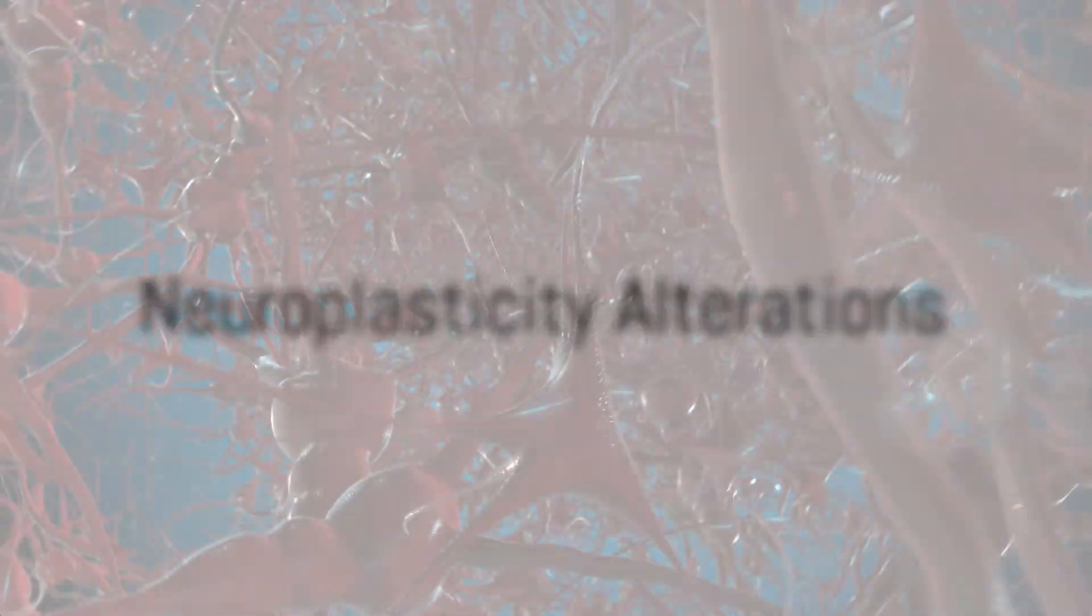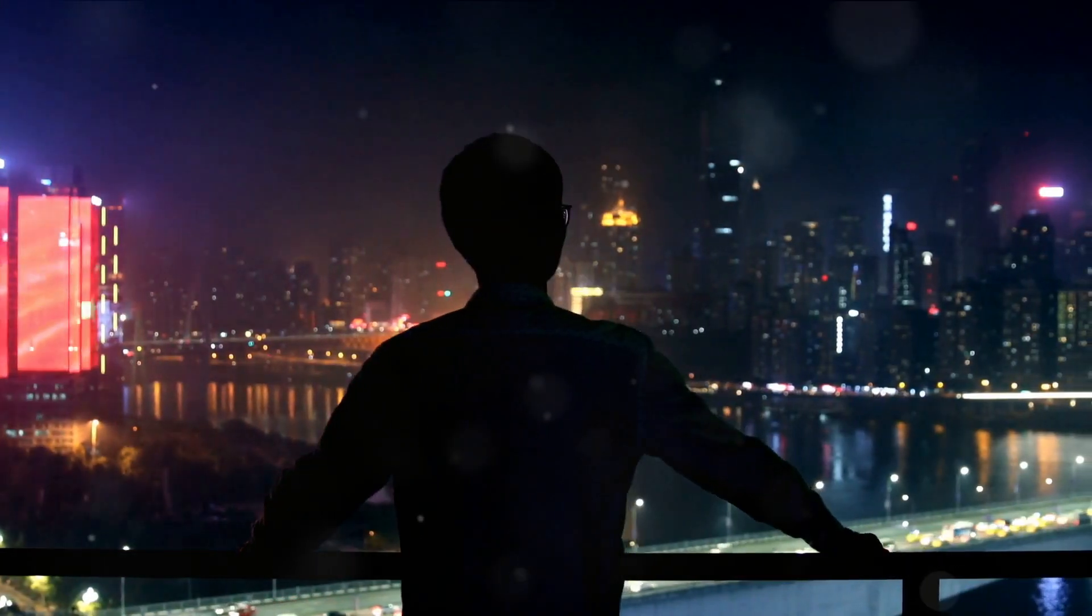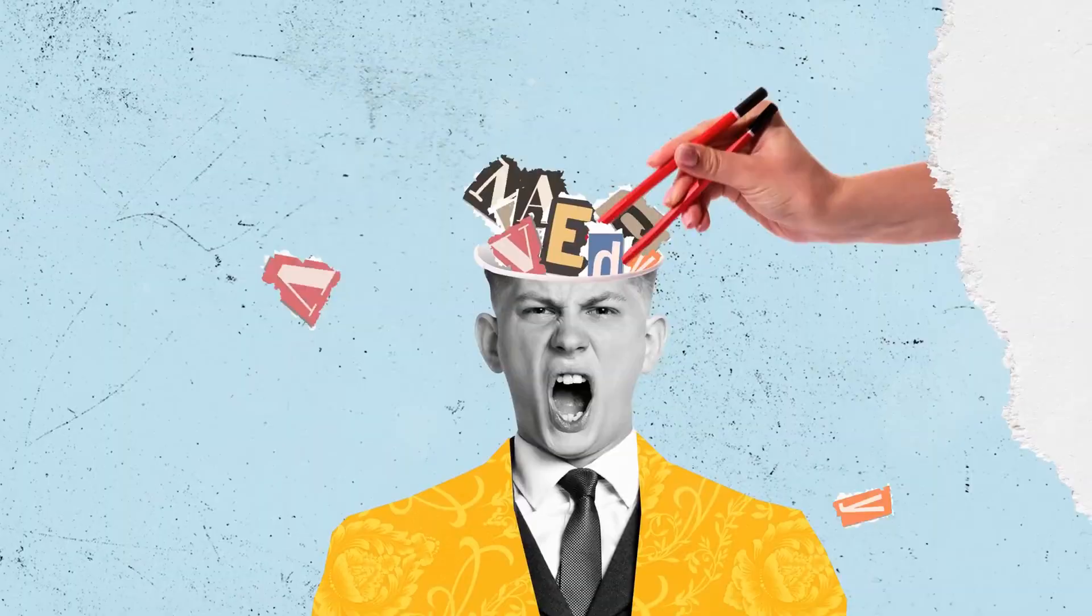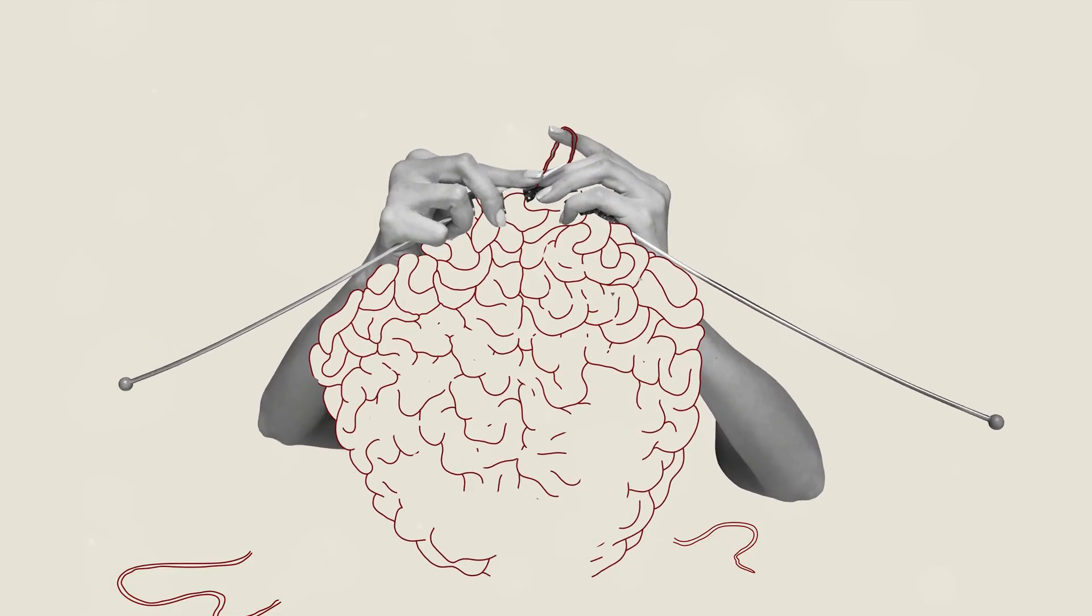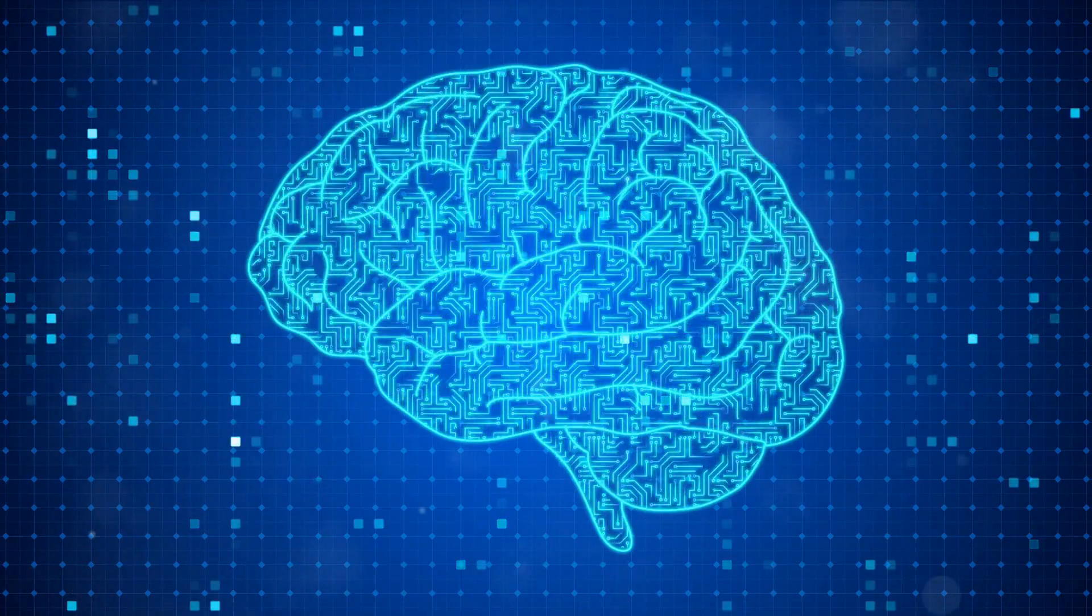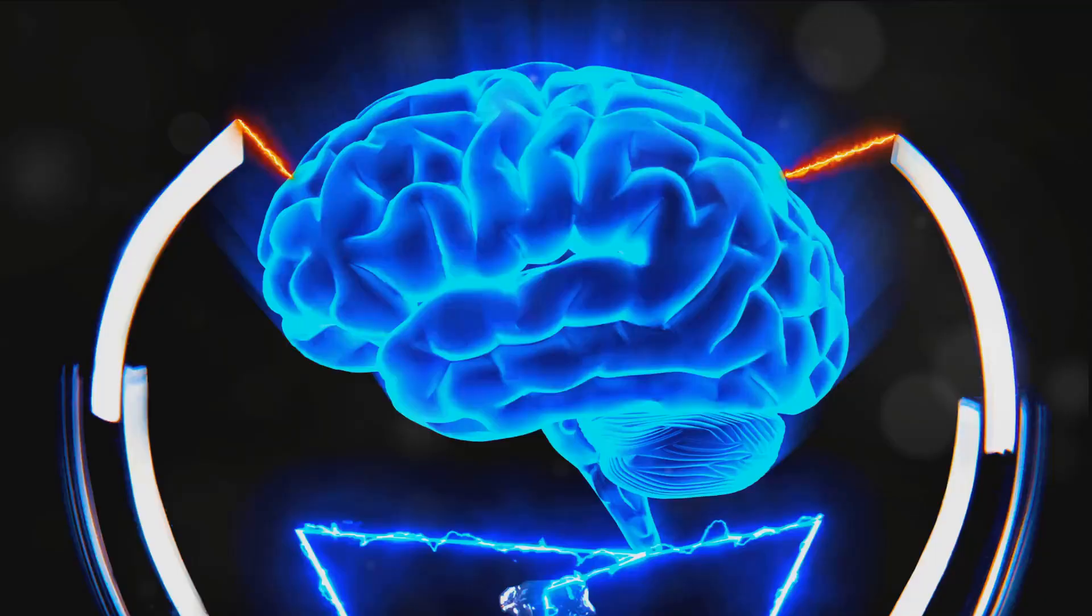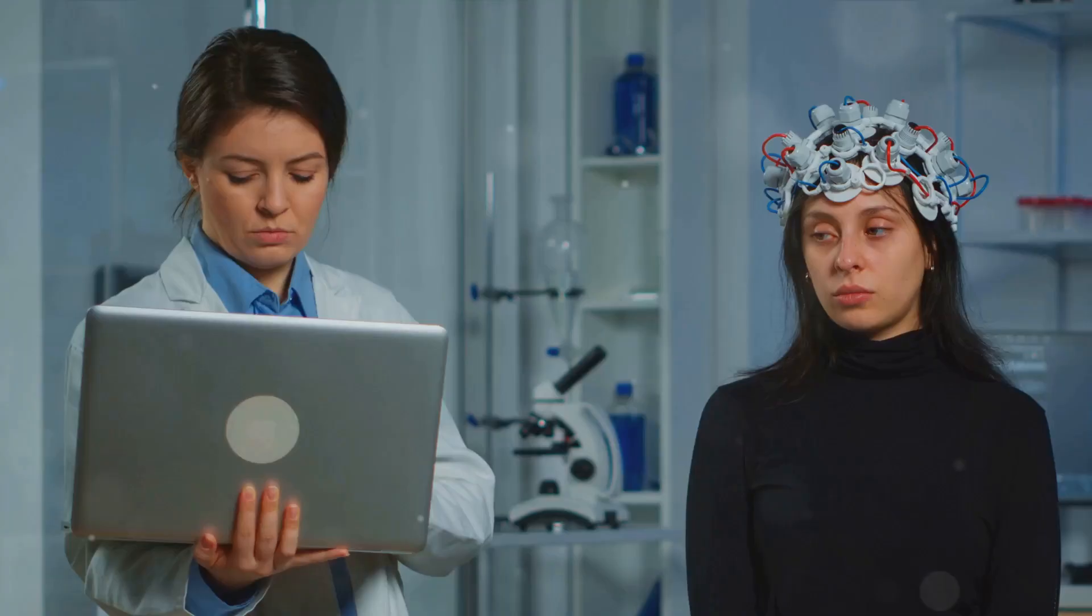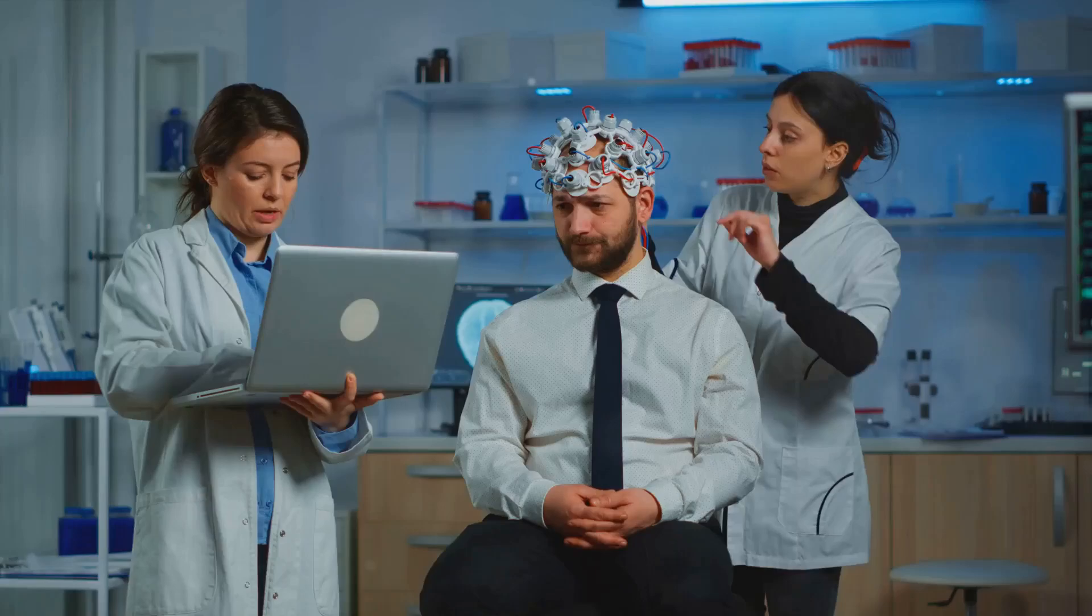First off, social isolation can disrupt neuroplasticity. Now you might be wondering, what exactly is neuroplasticity? Well, it's essentially our brain's remarkable ability to reorganize itself by forming new neural connections throughout life. It's like the brain's own superpower, allowing it to adapt and change based on our experiences and interactions.